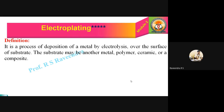Now we have two important methods of metal finishing: electroplating and electroless plating. I am going to explain the electroplating process. What do you mean by electroplating? Electro means electrolysis, plating means deposition. So deposition of a layer of metal over another metal by passing electric current — that is the meaning of electroplating. The definition: it is a process of deposition of a metal by electrolysis over the surface of a substrate. The substrate may be another metal, a polymer, a ceramic, or a composite.